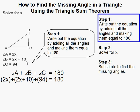Next thing to do is substitute. So here I have 2x is angle A, so I substitute 2x here. B is 2x plus 10, C is 94.